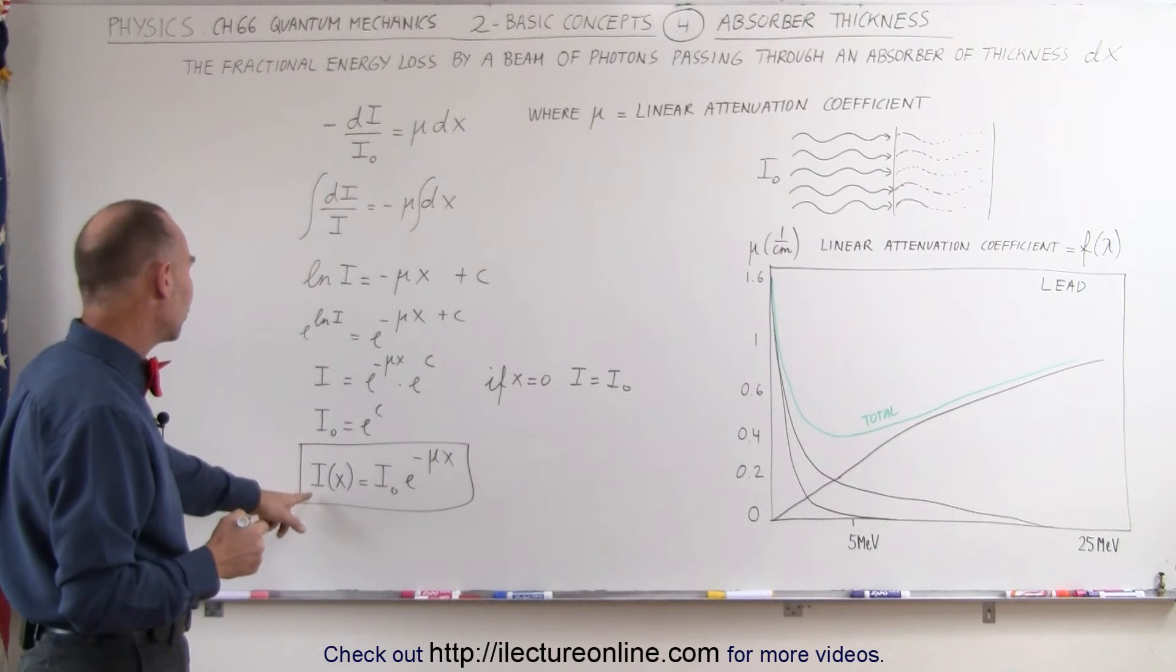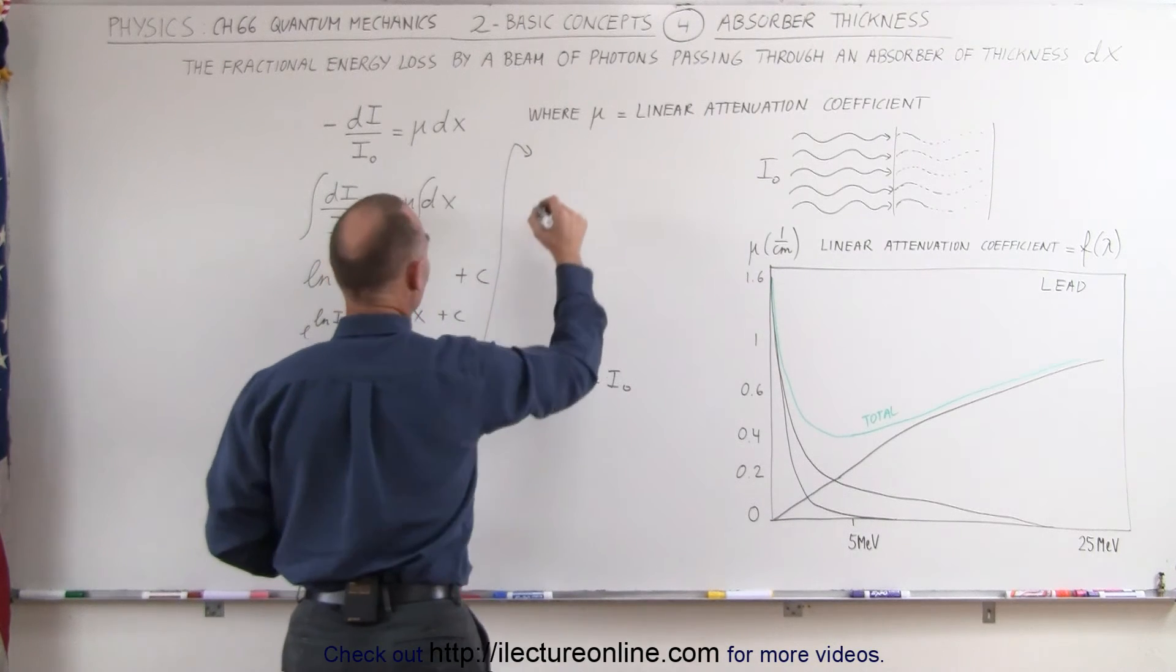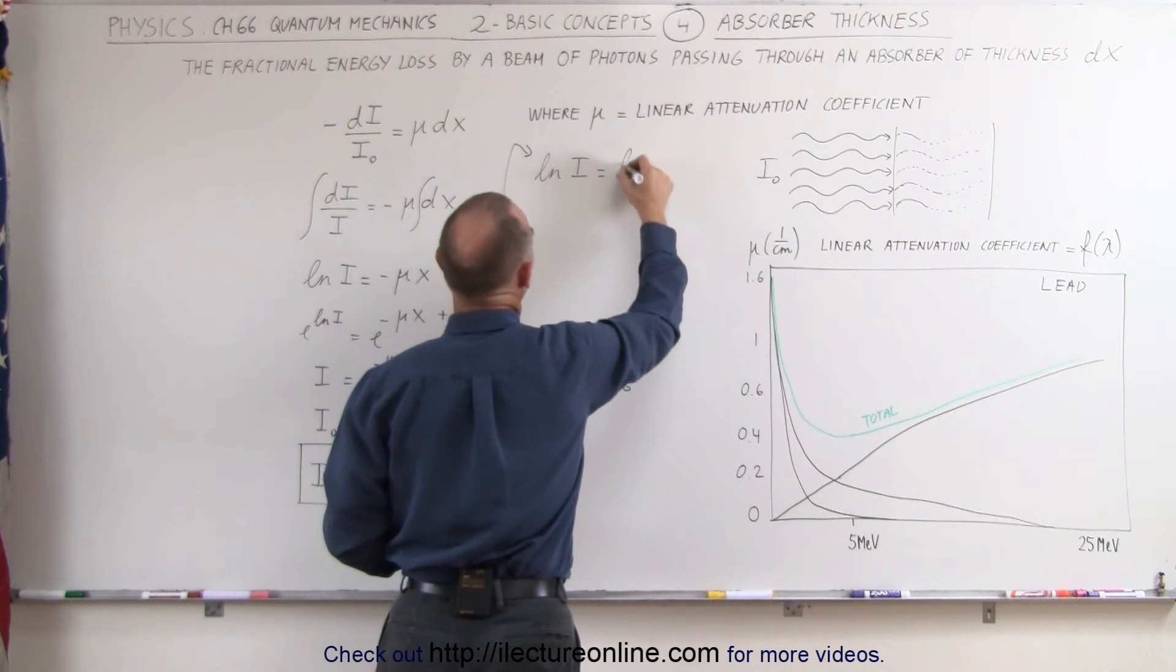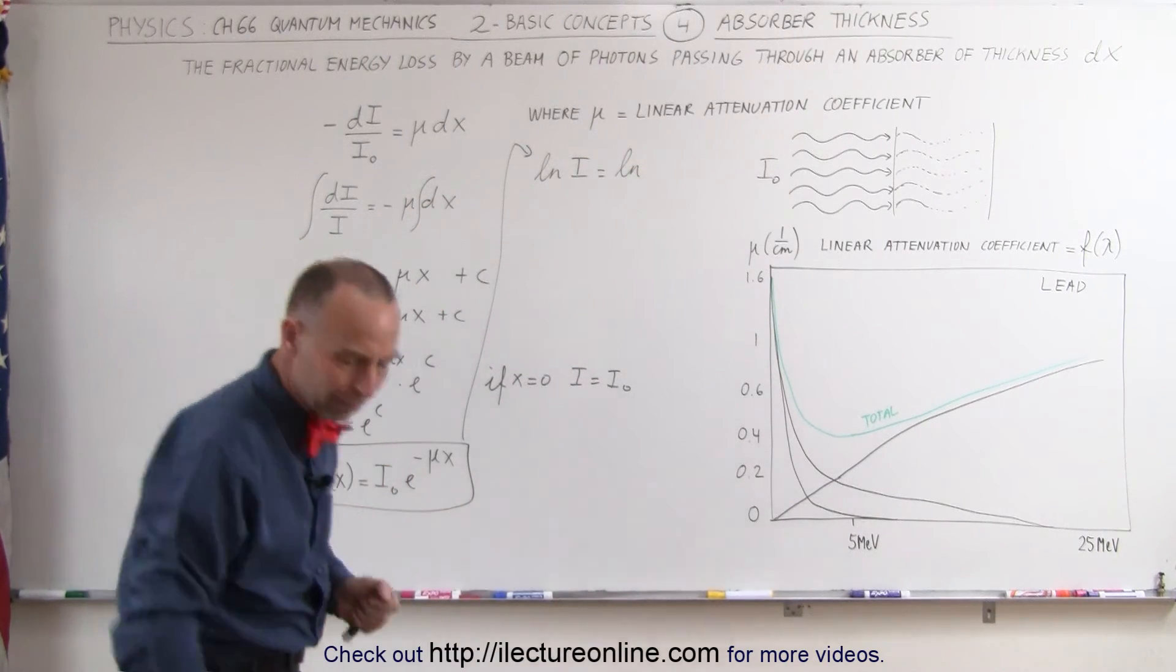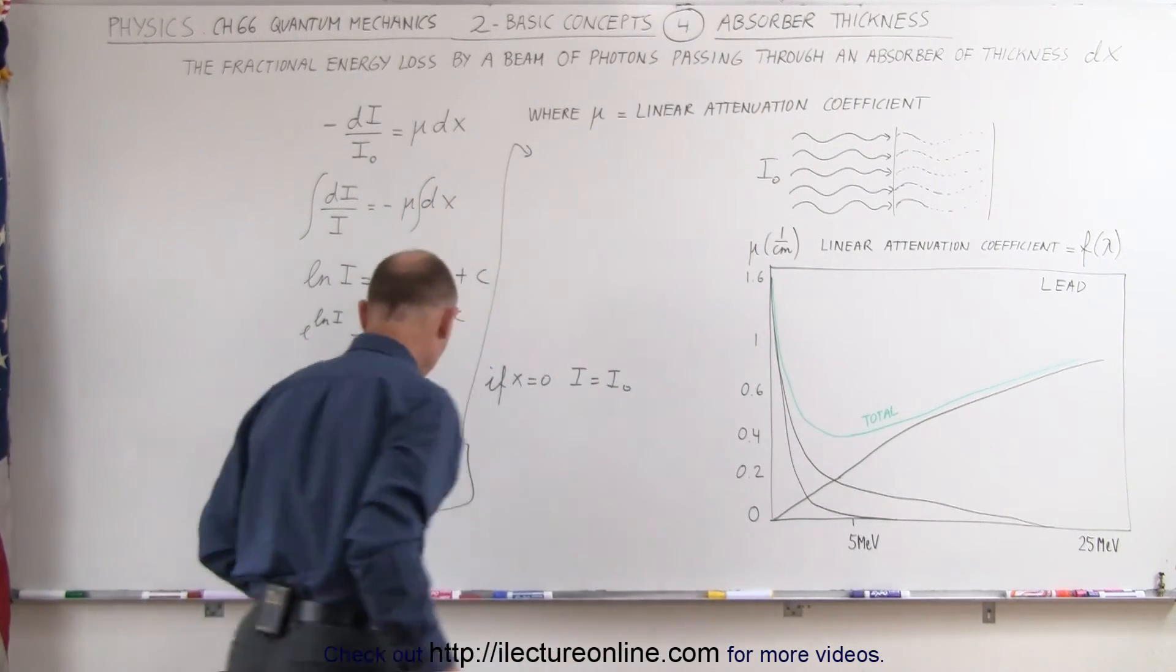What we then want to do is take the natural log of both sides. So let's come over here, take the natural log of both sides. Well, before I do that let me take one step, it's probably better to do it this way instead. Let's first divide both sides by I sub naught.